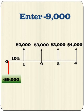Enter the initial cash flow of negative $9,000 that occurs at t equals 0.